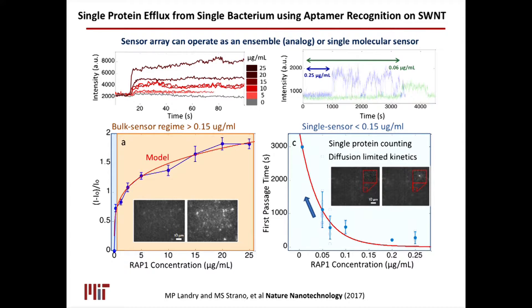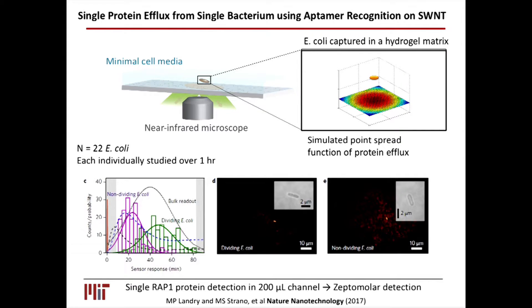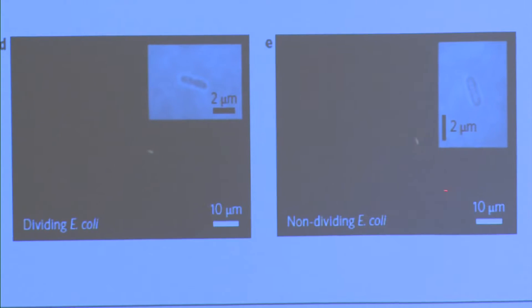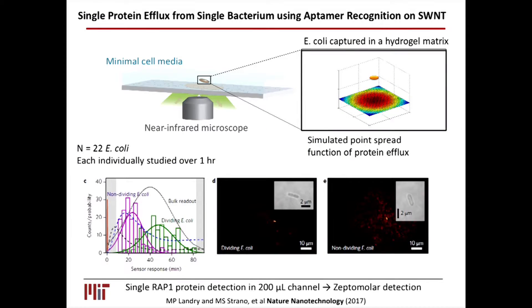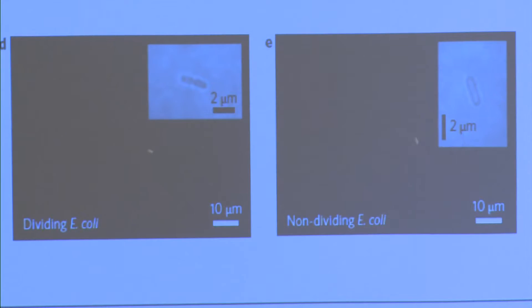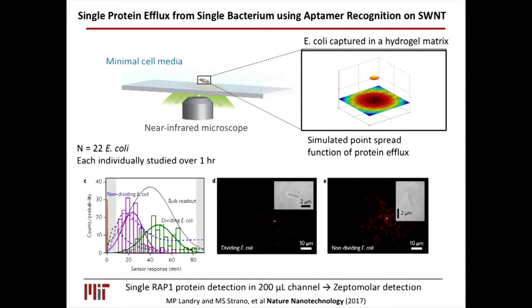Markita showed you can look at a single bacterium — these are E. coli emitting the RAP1 protein. You see sensors lighting up from single proteins coming from that single bacterium. Markita then went on to do some new biology: she showed that when bacteria are dividing, they actually stop their protein production, putting their metabolism toward reproduction, but before they resume effluxing protein. This is intuitive, but you can really only study it at the single organism level.